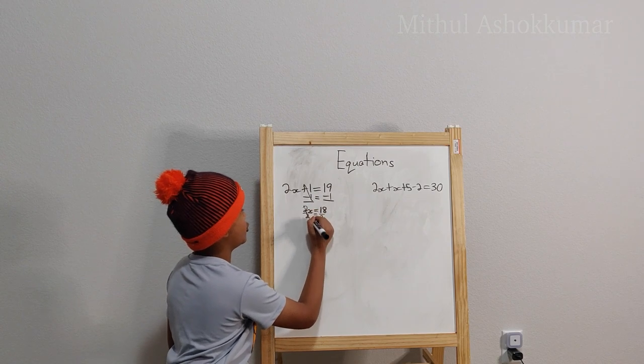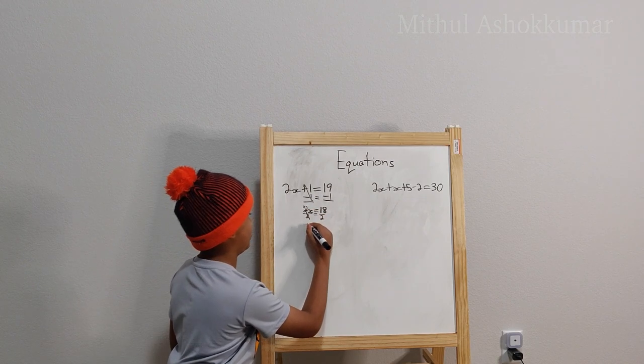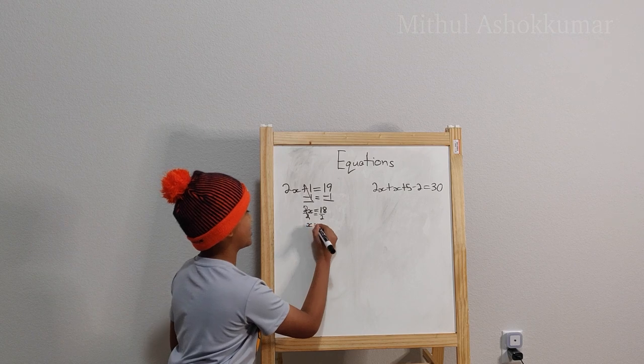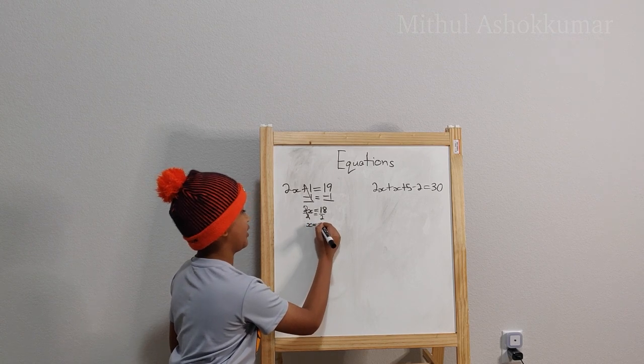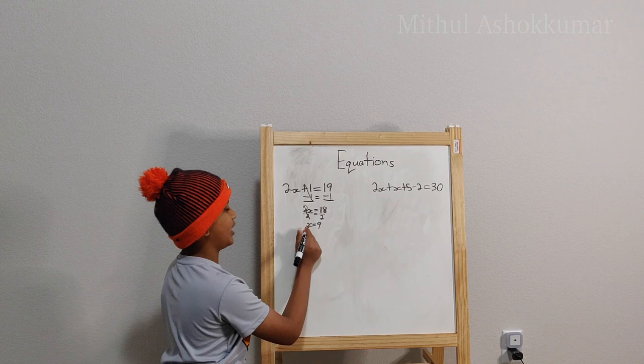So then these 2's cancel out. So all we have remaining on this side is x and on the other side we have 9. So x equals 9.